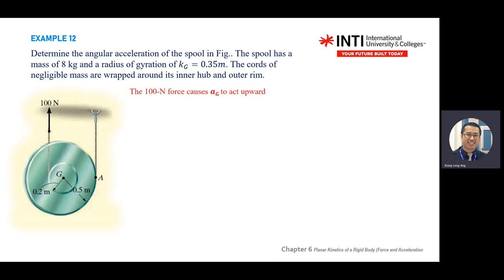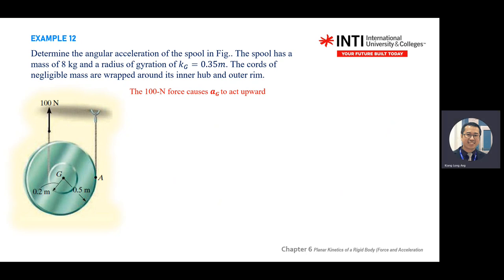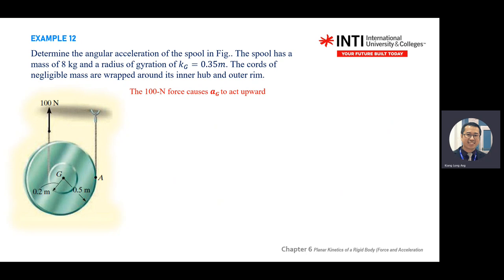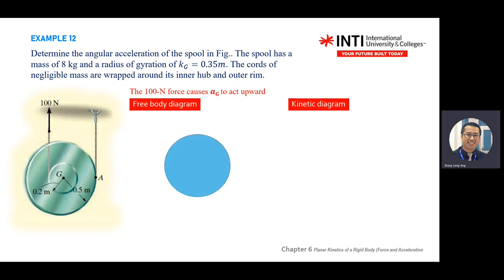When you pull, look at where the center of mass moves — in this case it moves up. So although it rotates, the center of gravity moves up. For the kinetic diagram: left-hand side is all the forces; right-hand side includes acceleration multiplied by mass and I_G times alpha.